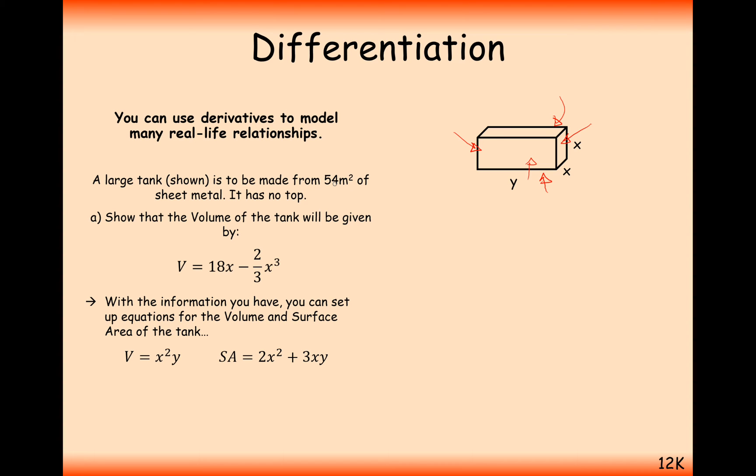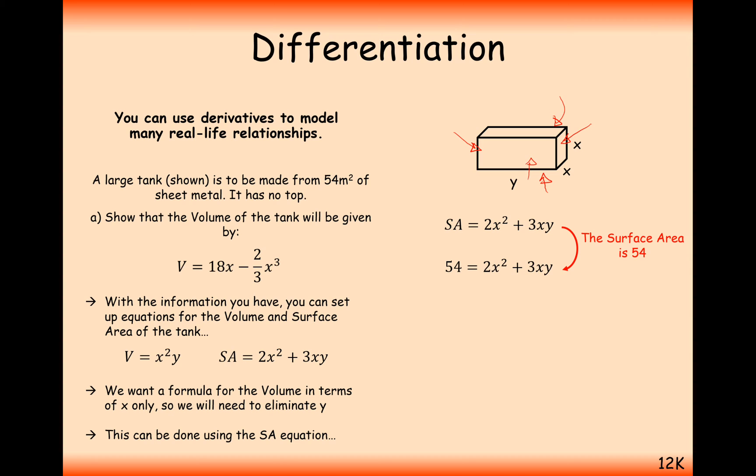Well, we know the value of the surface area, that's 54. So we can rearrange this to give us 54 equals 2x squared plus 3xy. So subtract the 2x squared. What we're trying to do here is make y the subject. And we get this expression here, 54 minus 2x squared over 3x.